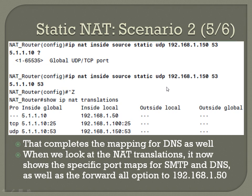That completes the mappings for DNS as well. We look at the NAT translation and now show those specific port maps for SMTP and DNS, as well as the forward-all option to 192.168.1.50.